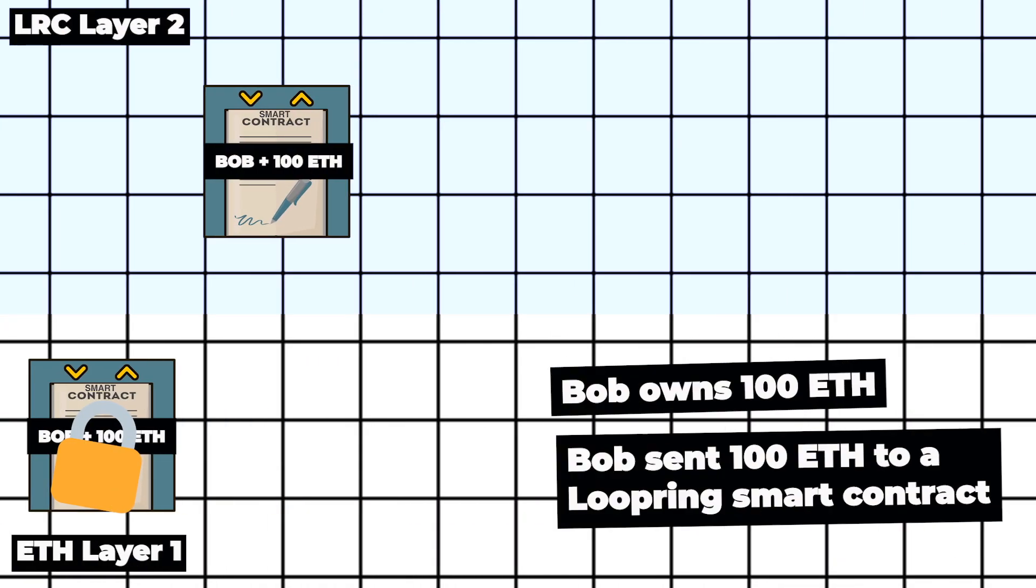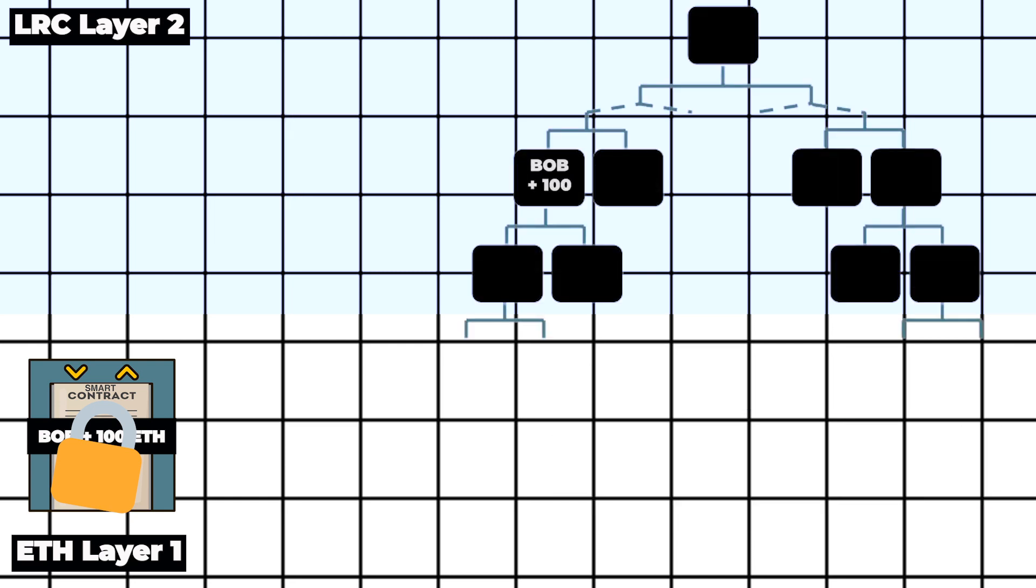Coming back to the example, the account with your 100 Ether on layer 2 is actually part of a Merkle tree, which is simply a data structure that records everything that happens on the Loopring protocol. Let's say you owe your friend who also uses Loopring 50 Ether and you want to send them to him.